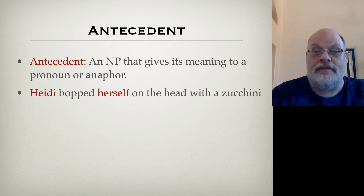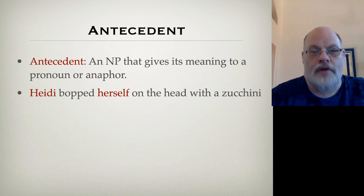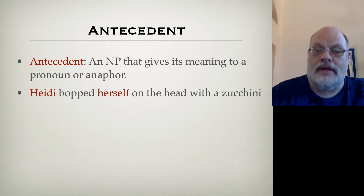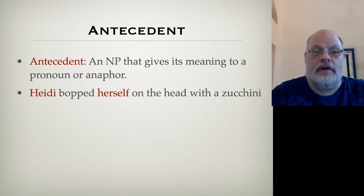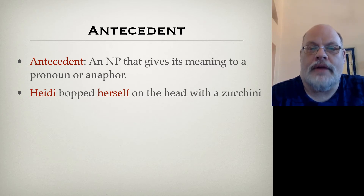So we have our three types of noun phrases. We have R expressions, which are referring expressions. We have pronouns, which may get their meaning from another word in the sentence or from context. And we have anaphors, which obligatorily get their meaning from a noun phrase in the sentence.